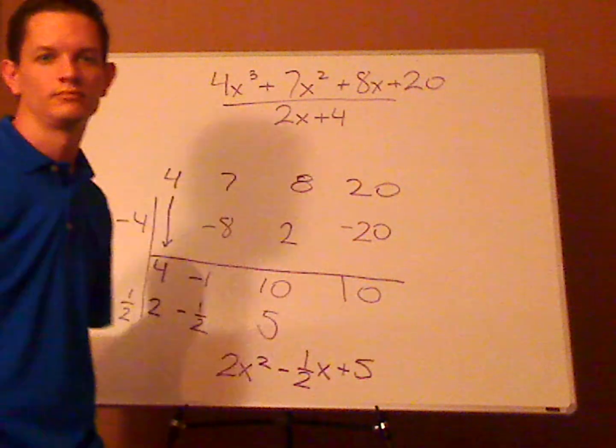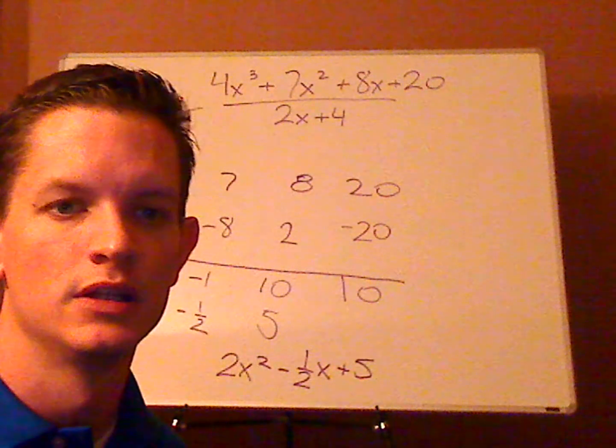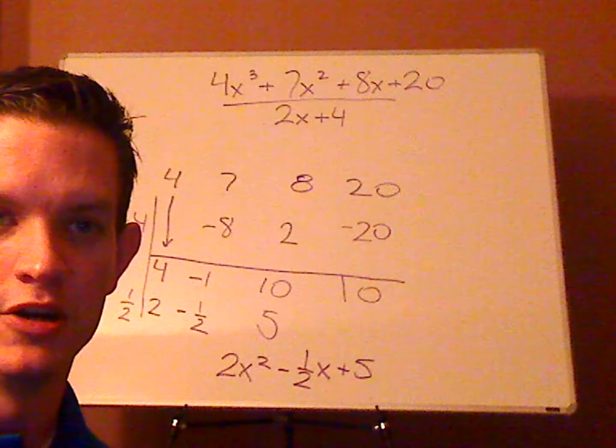That's it. So, 2x squared minus 1 half x plus 5 would be your answer.